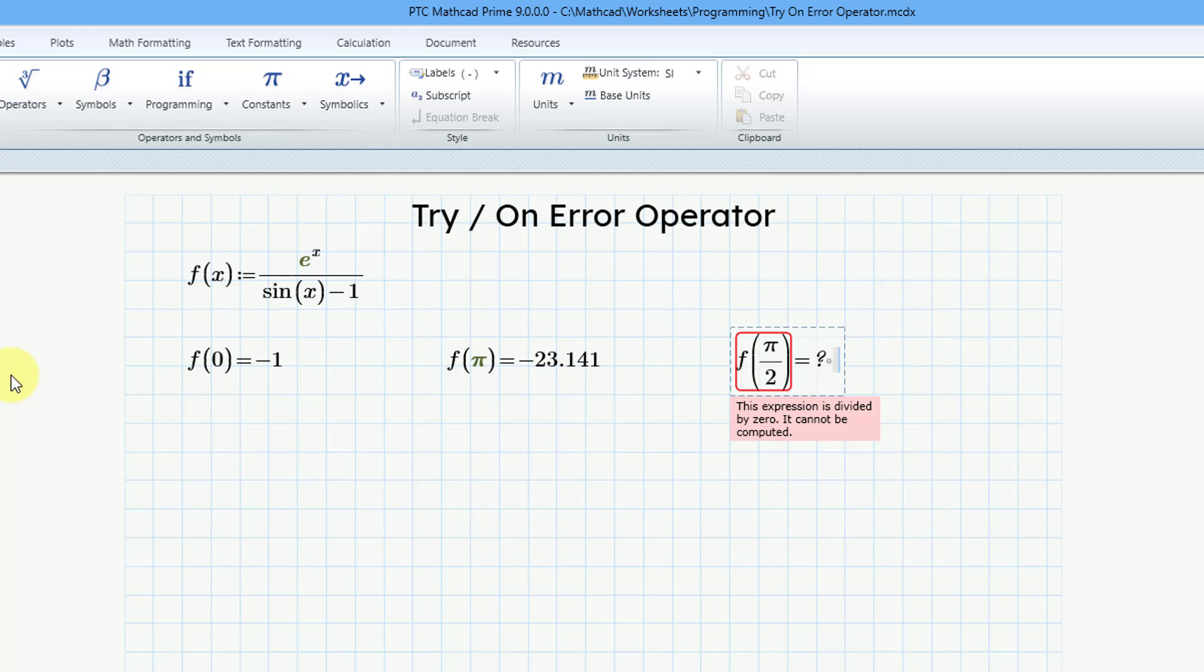So how can you prevent divide by 0 errors or other errors when you are evaluating different expressions? That's where try comes into place. And so let's take a look at how to do that.